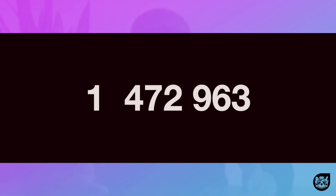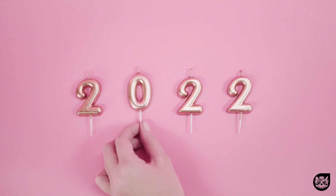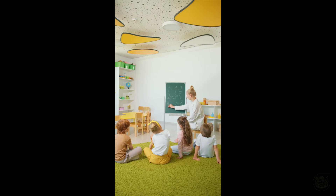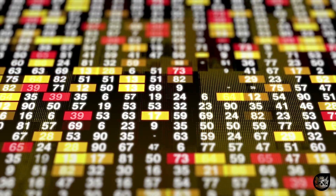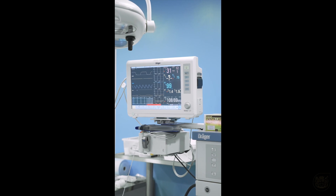Let's look at a nice large number: 1,472,963. All these numbers come from those 10 digits. You can look around at home, go to class, go out — just look at the numbers. It's all made up of those 10 digits.